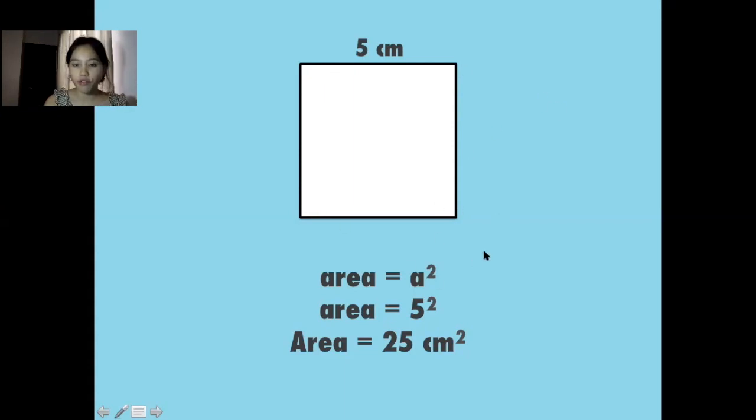To get the area of a square, the formula is a to the second power or a squared. So squared or two is the number of times you multiply a, which is the side to itself. a is 5, so 5 squared. So you need to multiply 5 to itself twice. So 5 times 5 is equal to 25 centimeters squared, which is the area of this square.